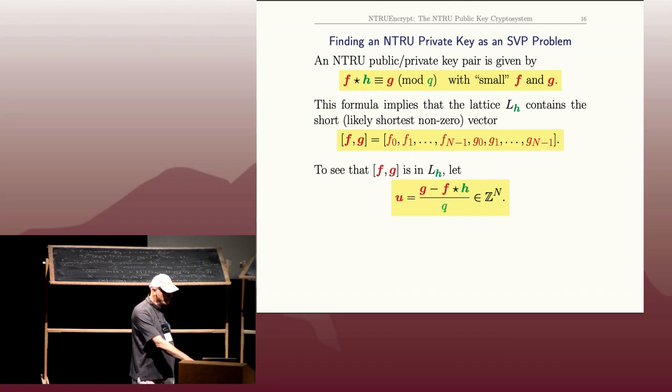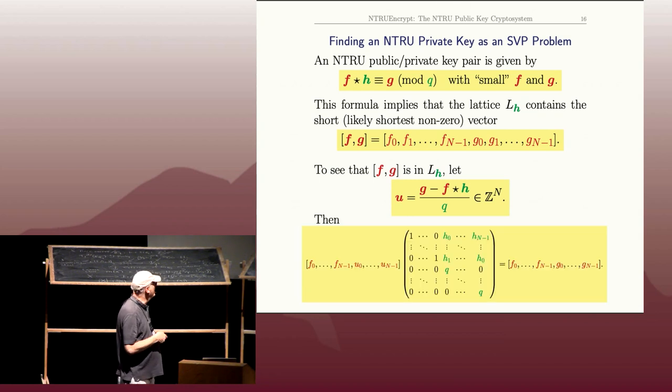If you want to see why (f,g) is in the lattice in terms of the row vectors, you take f_1, f_0 times the first row, f_1 times the second row, then u_0 times the (n+1)-st row where u's created in a certain way. If you multiply it all out, you'll see that the vector with the f and g coordinates is actually in this lattice L.